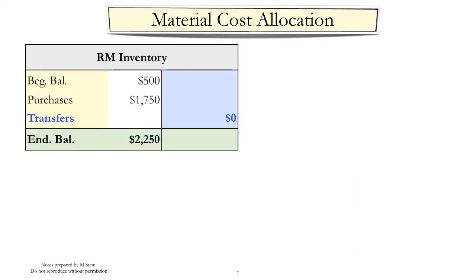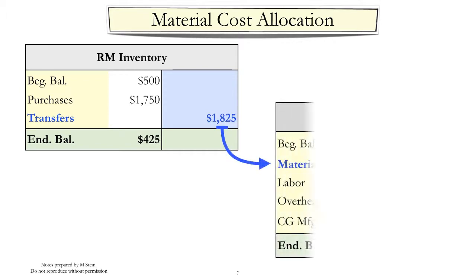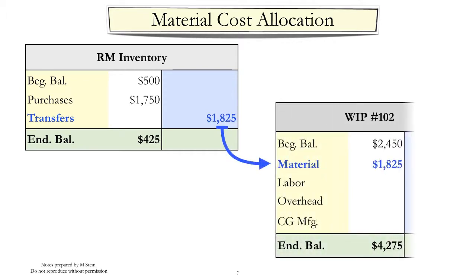Here is the accounting for the transfer of raw materials to work in process. Notice the credit to raw materials and the debit to the work in process account.